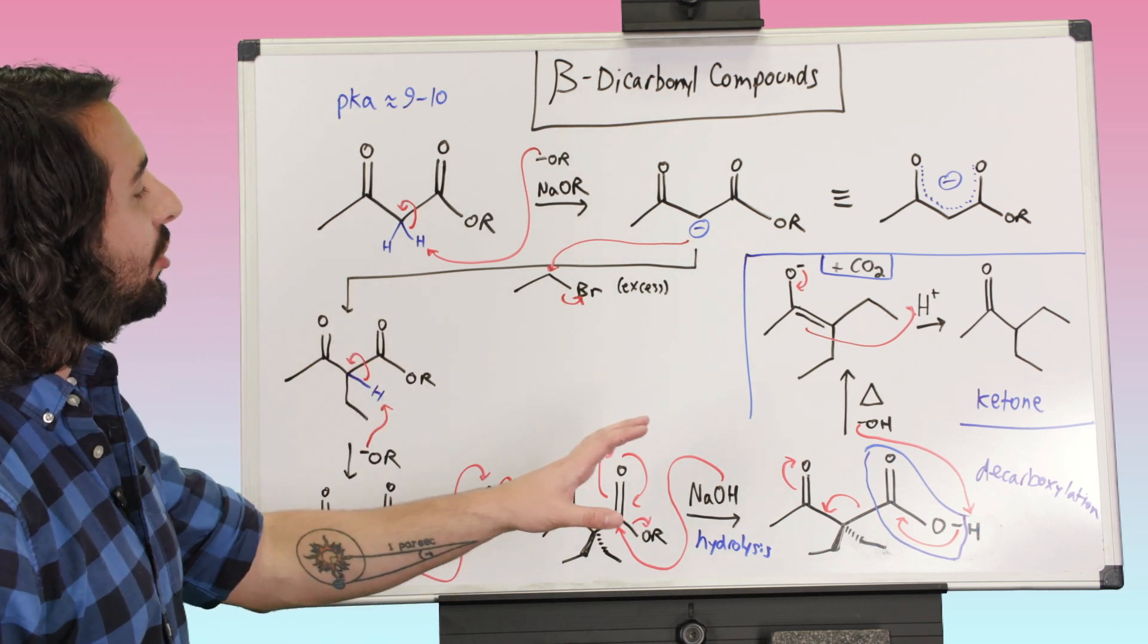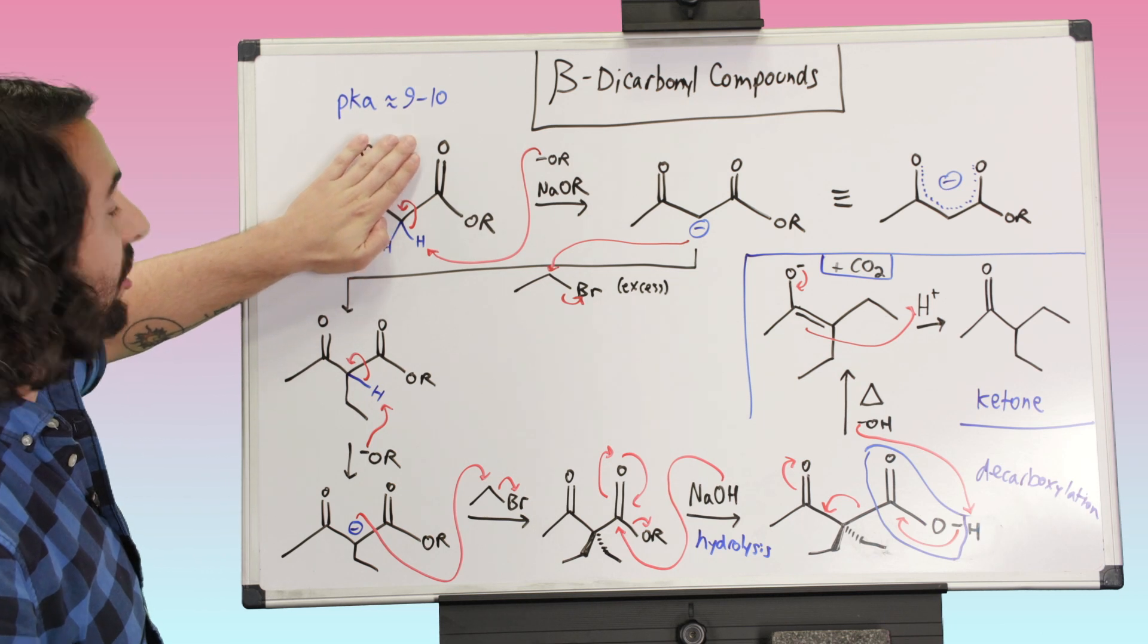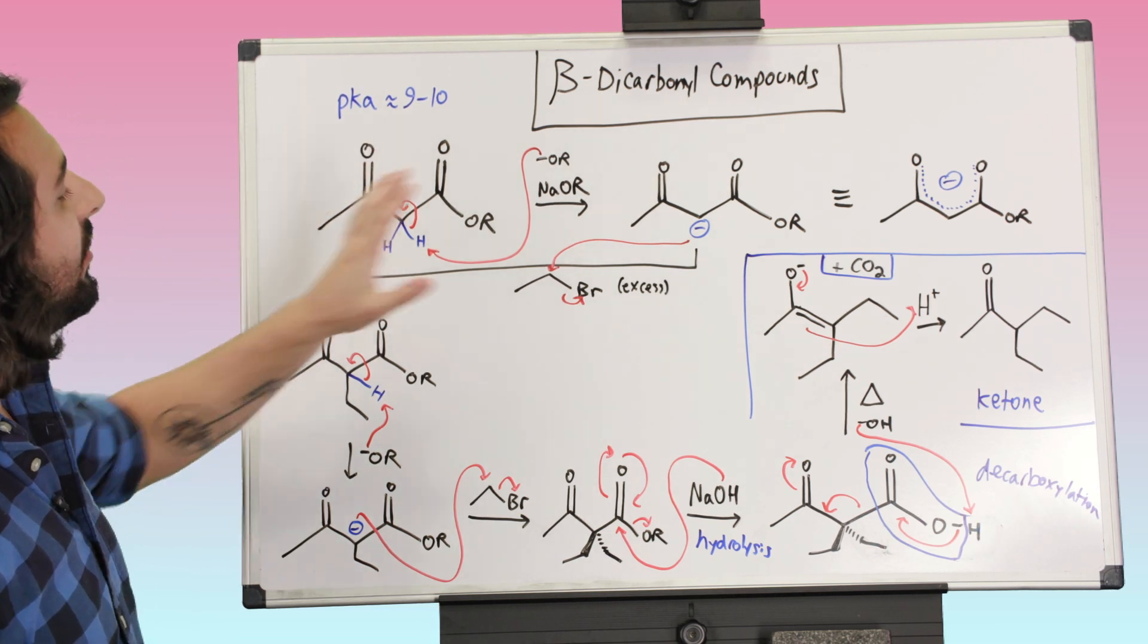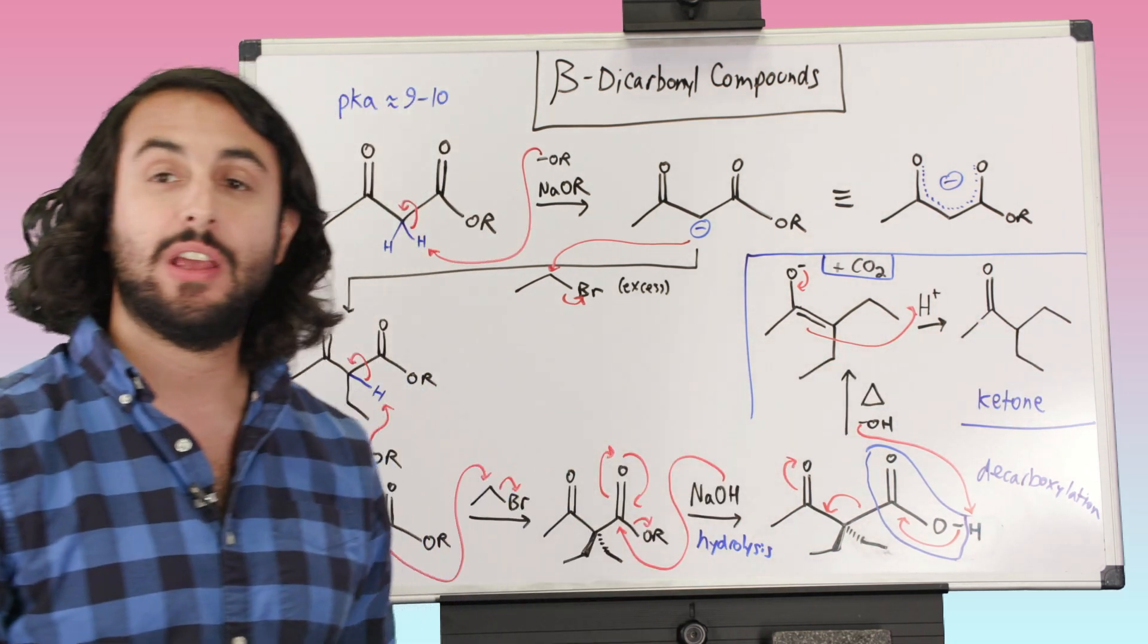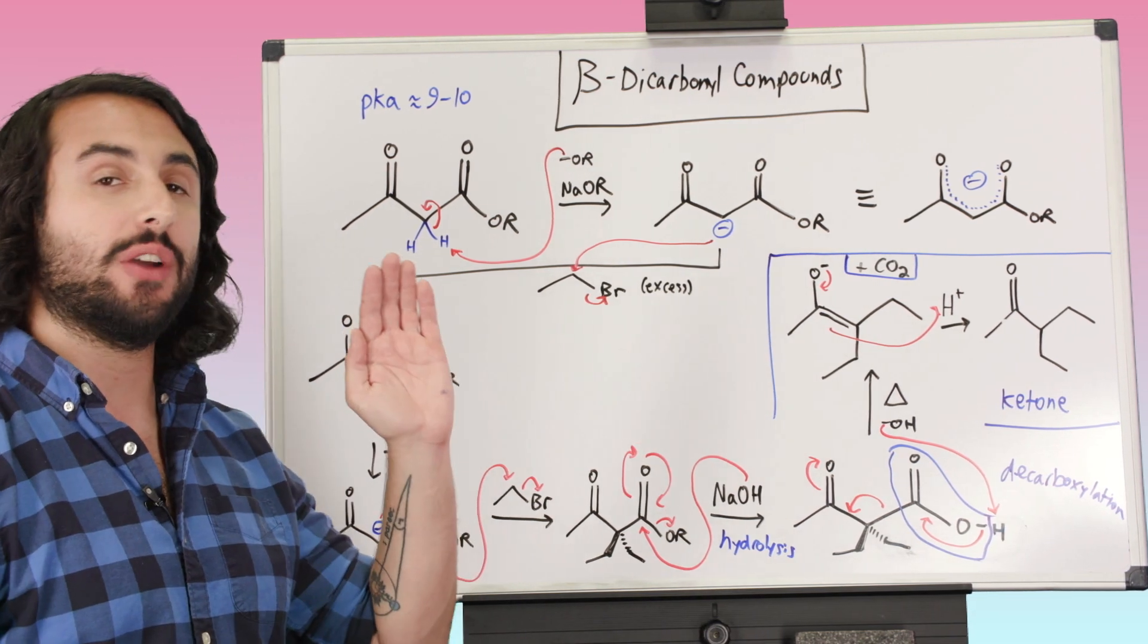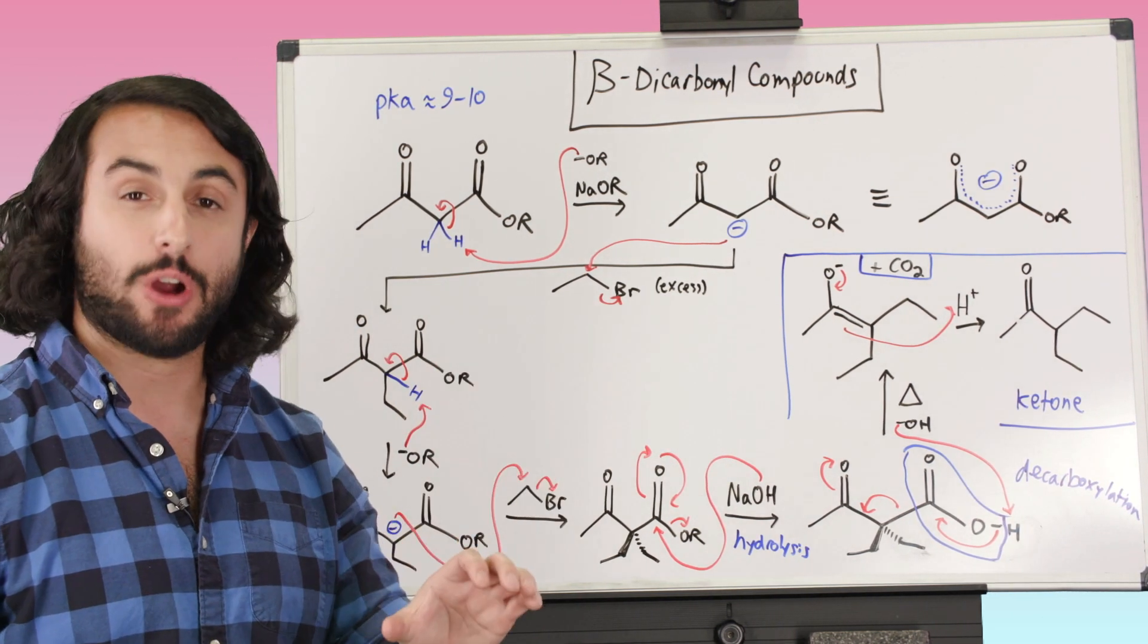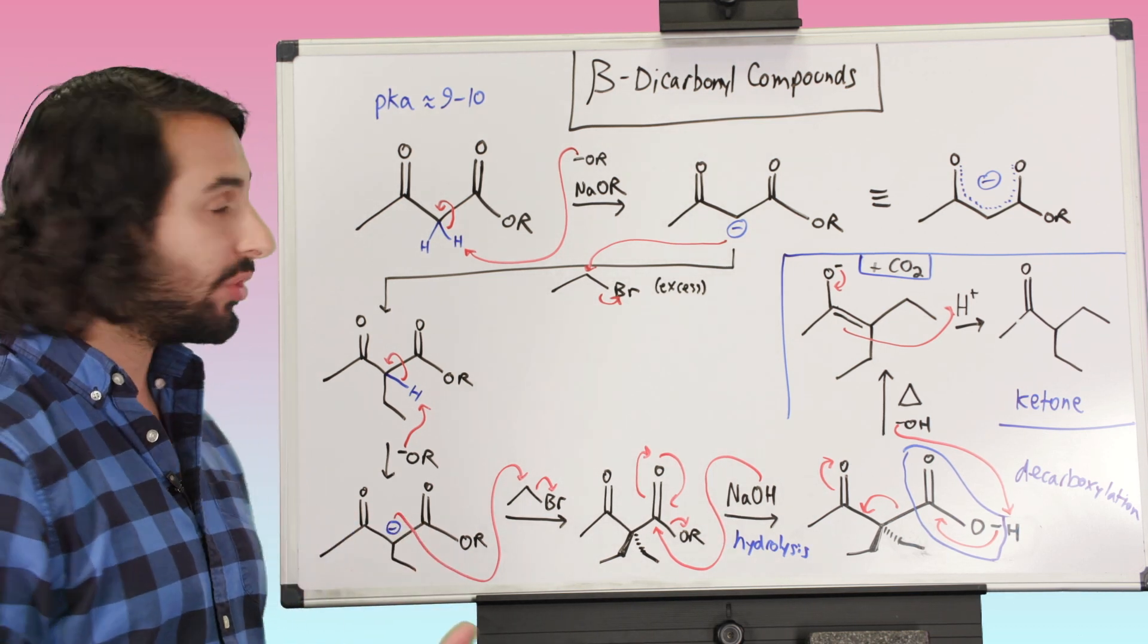So we could have done all of this chemistry. We could have started with a two-carbon ester like this, just this two-carbon ester, and we could have done all of this chemistry to get this one, two, three, four, five, six, seven carbon ketone. So it's actually quite powerful synthetically. We've gone from a two-carbon compound to a seven-carbon compound, and all we've done is simple enolate chemistry and SN2, so it's not very complicated.